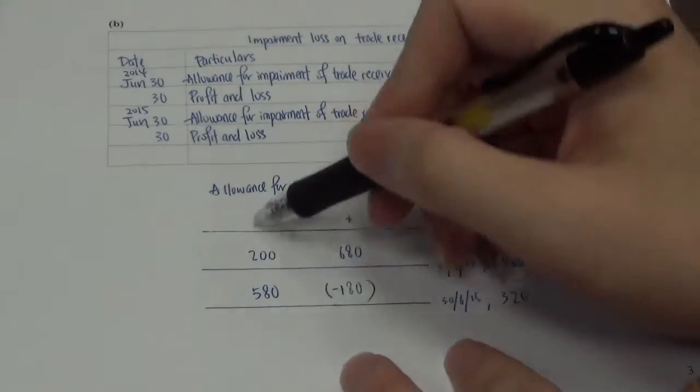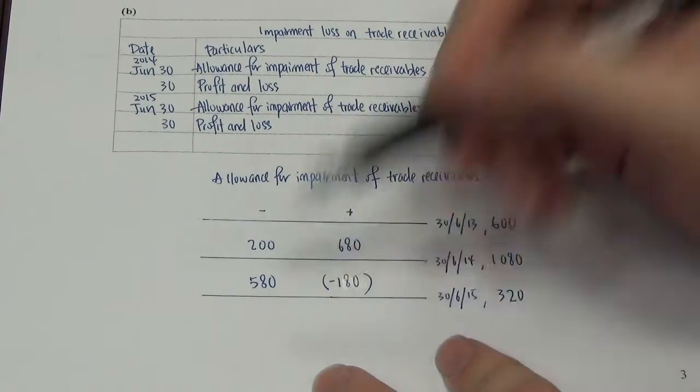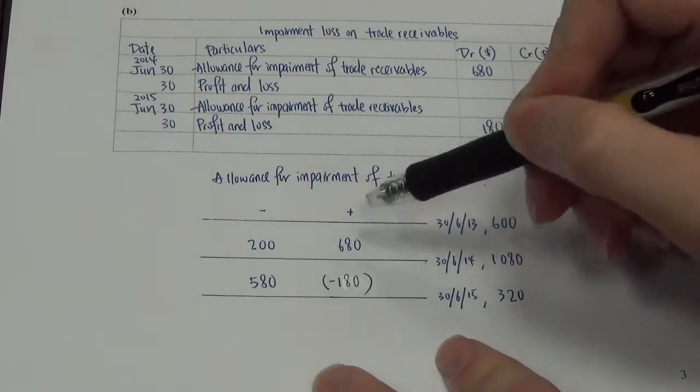Okay, then after that, this one, remember, this one is for all those confirmed uncollectable. So, put in the amount based on the date. Alright, then after that, you calculate this.